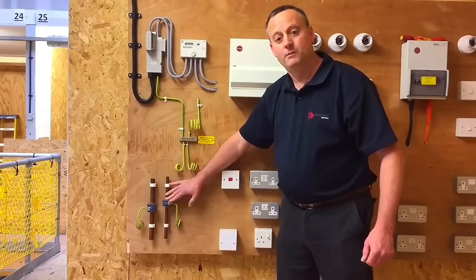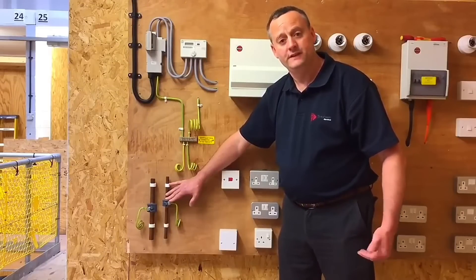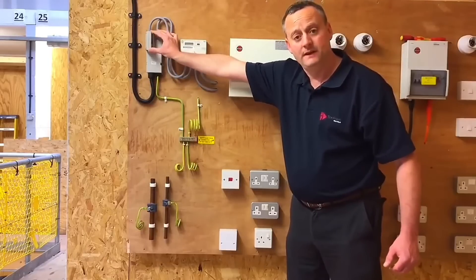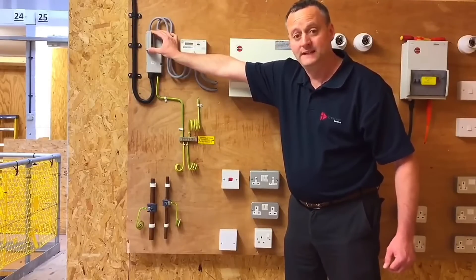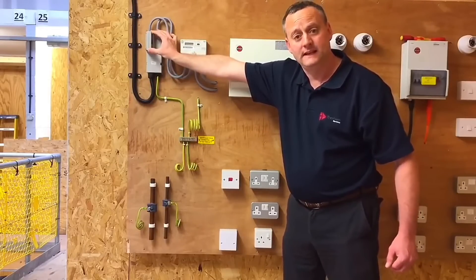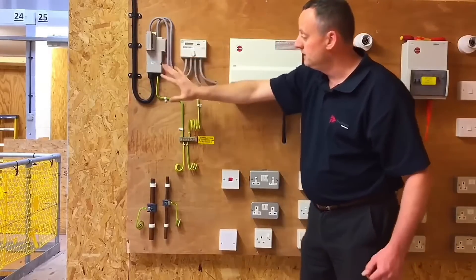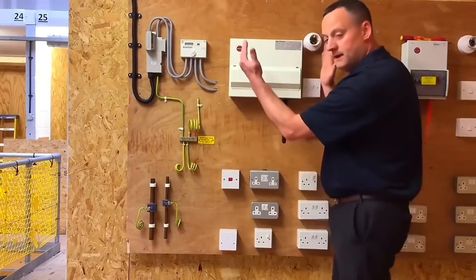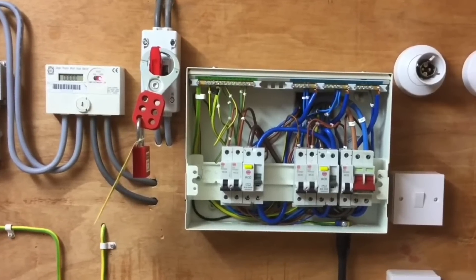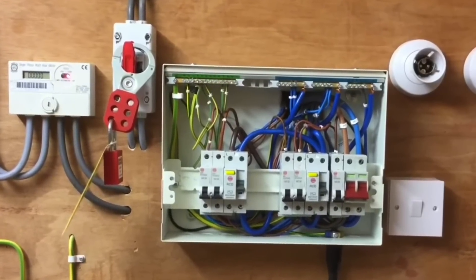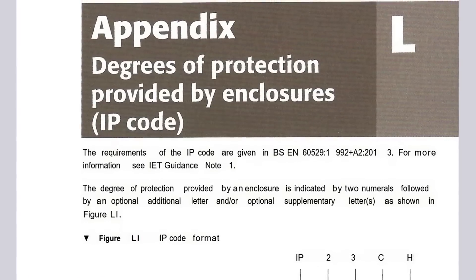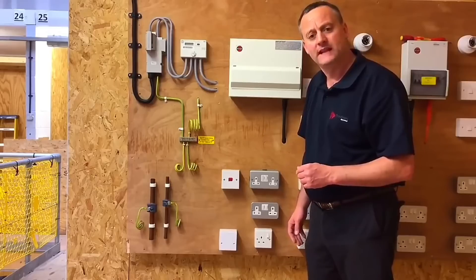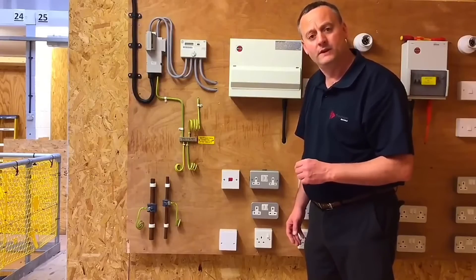In order for ADS to apply, we need the appropriate fuses in the appropriate places. The fuse in the incoming cutout is 100 amps — it could be 80 or 60. We've got a 100 amp cutout fuse, 25mm² tails, 16mm² earthing conductor entering our consumer unit. Before entering, I want to confirm the IP rating. IP stands for Index of Protection or International Protection — both of those can come up in our exam, both for what IP stands for.